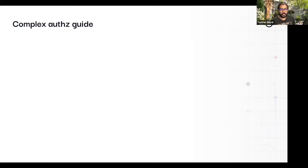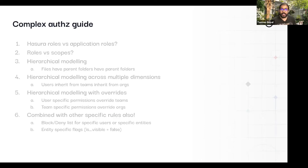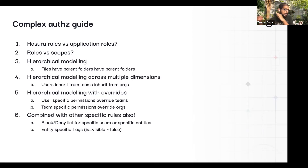When you start thinking about authorization and when authorization starts to become complex, the kinds of problems that you're confronted with — that we don't have direct answers for, although there are many different ways of achieving it — would be things like: should I be using Hasura roles, and does that map one-to-one to application roles, or is my notion of application roles a little bit different?